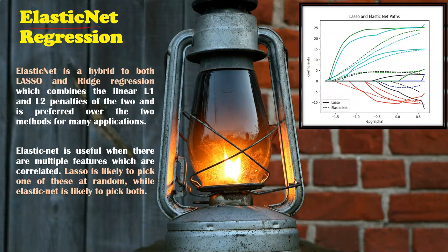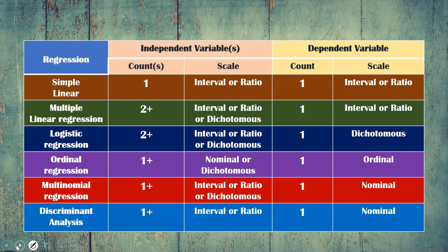Elastic net regression is a hybrid of lasso and ridge regression, combining L1 and L2 penalties. It is preferred over the two individual methods for many applications. I hope you understand the different types of regression and their assumptions — I am going to compile the entire overview in a single chart.